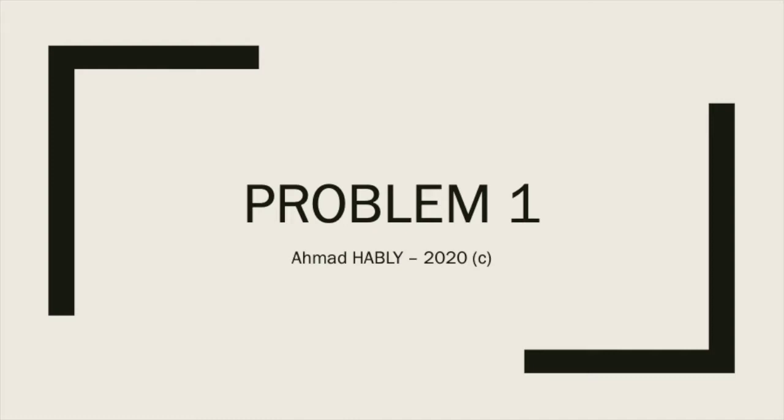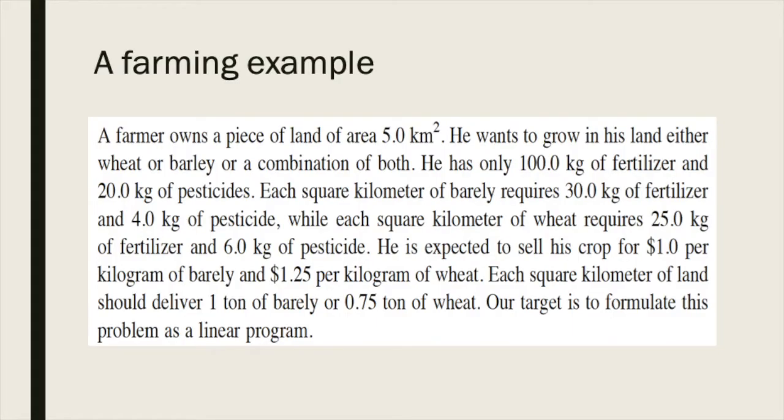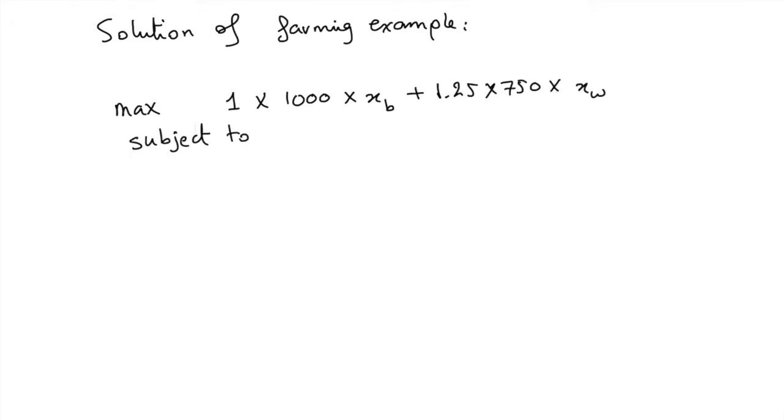I put the problem just for revision. The solution for this farming example is the following: we want to maximize this cost function or this profit function subject to these constraints less than 100.